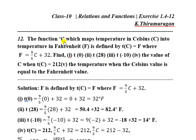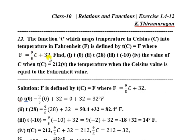Very simple. The function T is defined: T of C equal to F. Temperature in Celsius C is mapped to Fahrenheit F. So T of C equals 9 by 5 into C plus 32.